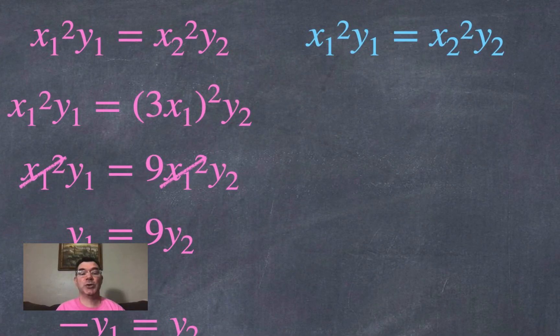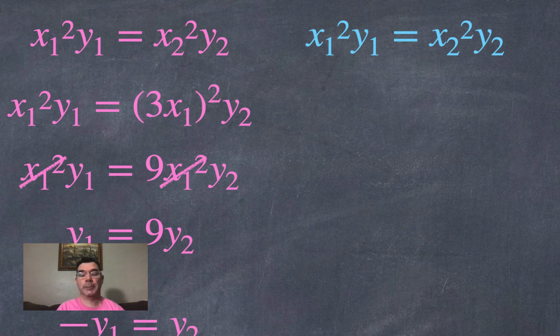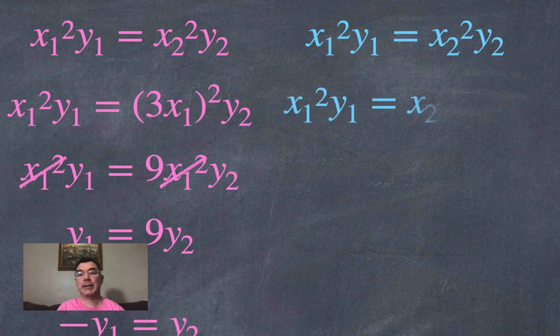All right, to answer the blue question, what's going to happen to x if y is multiplied by 4? So what that means is my second y is going to be 4 times my first y. So let me make that replacement.